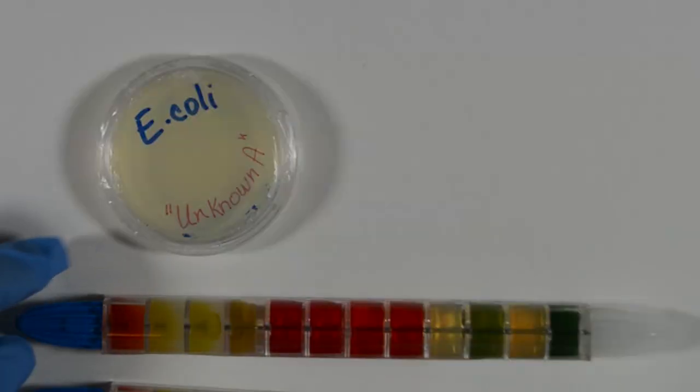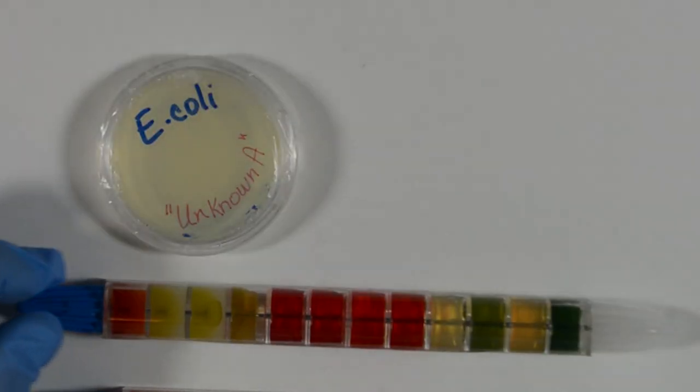We have two things in front of us. The entero pluri, which has 12 compartments that have various biochemical tests in them. We also have a plate with bacteria. This is a pure culture of the bacterium to use as inoculum for the entero pluri.